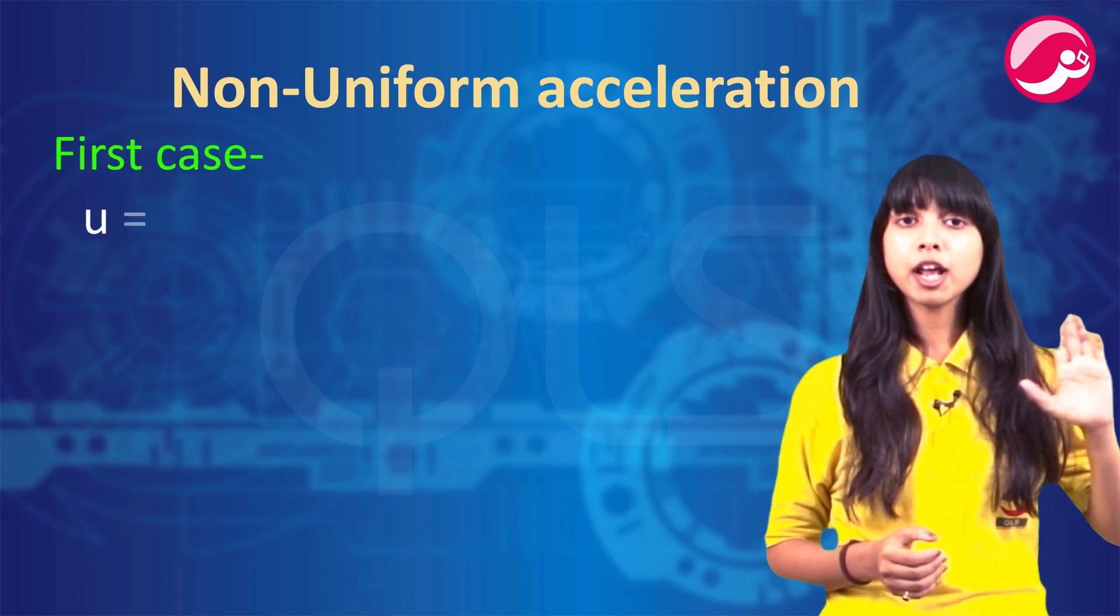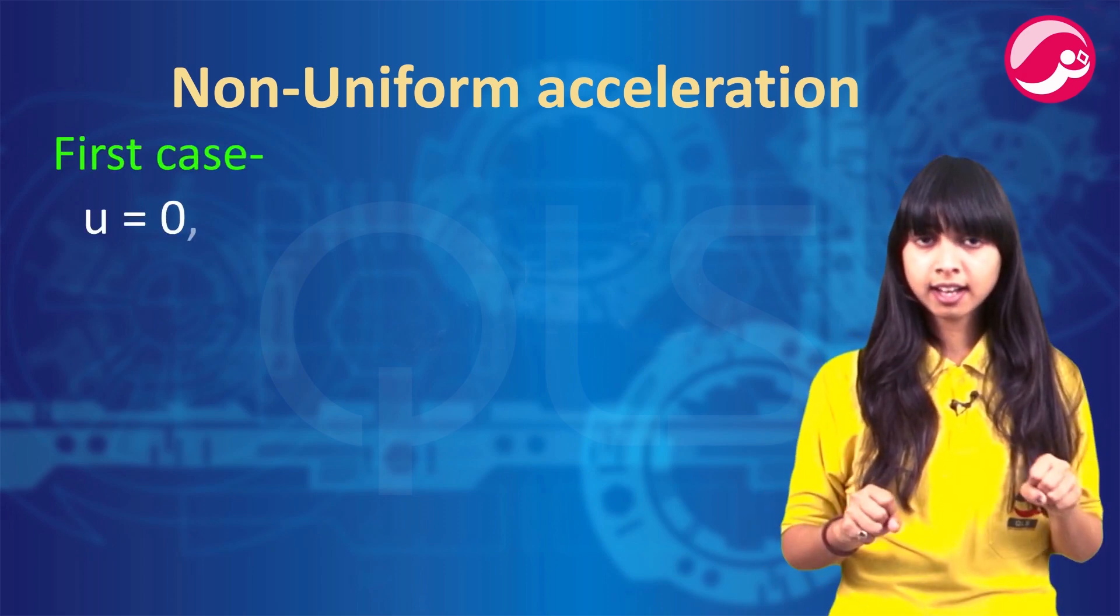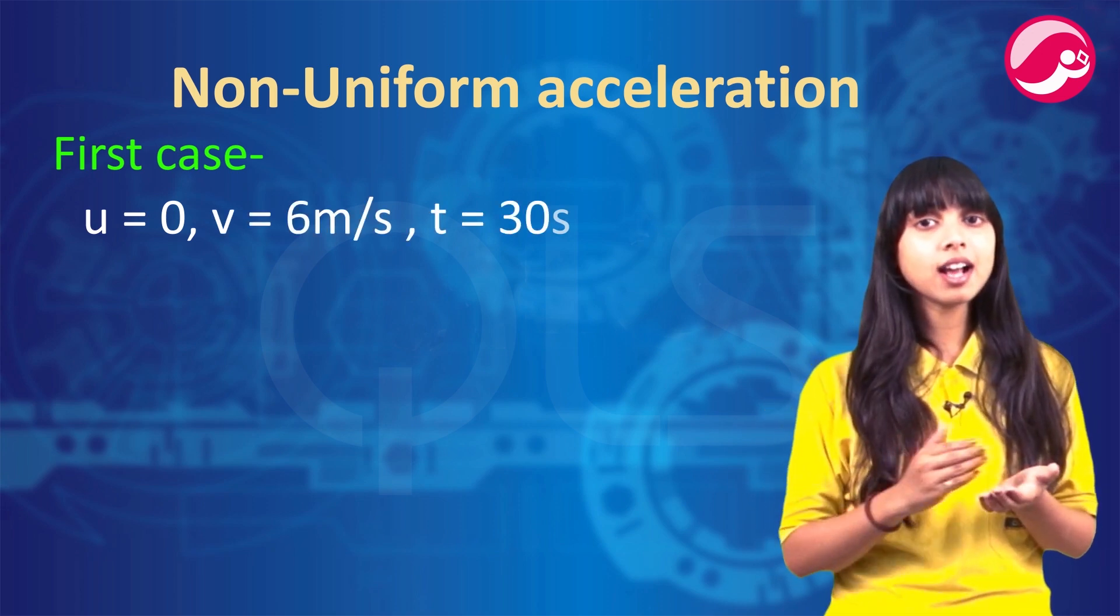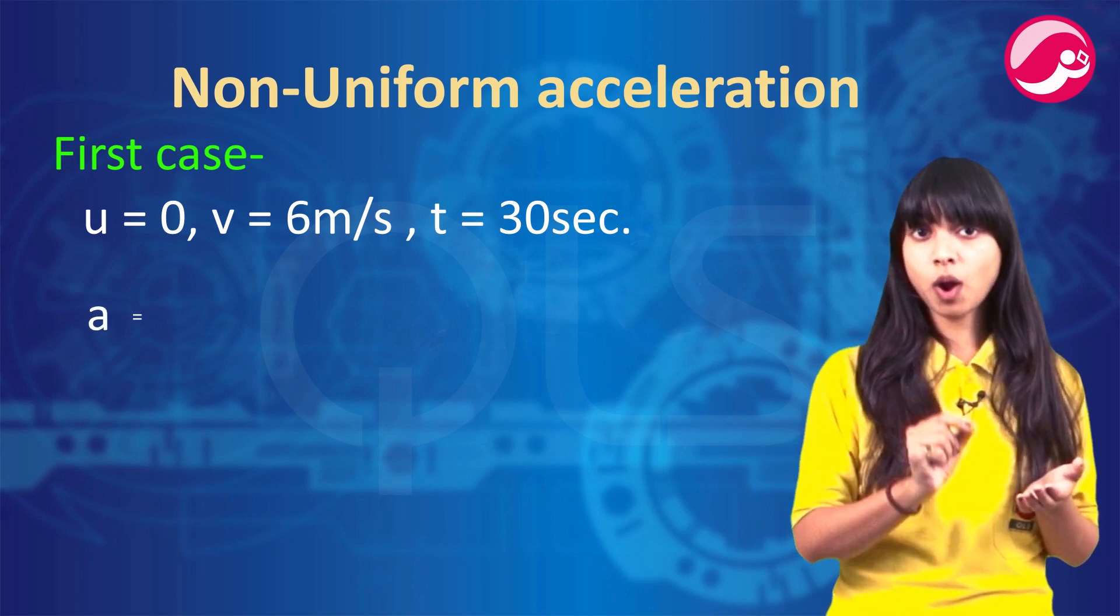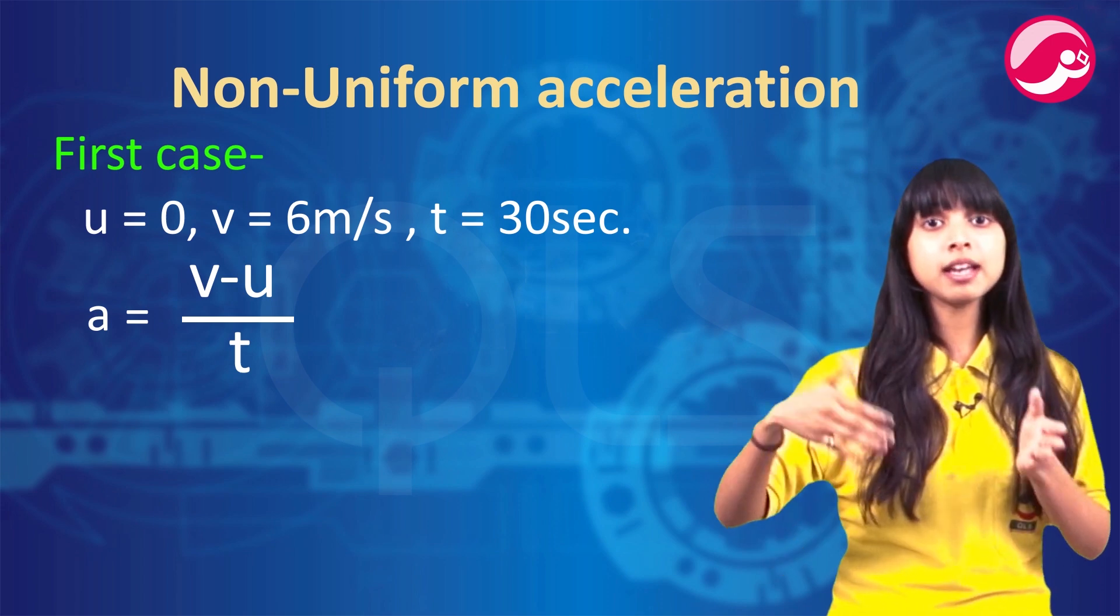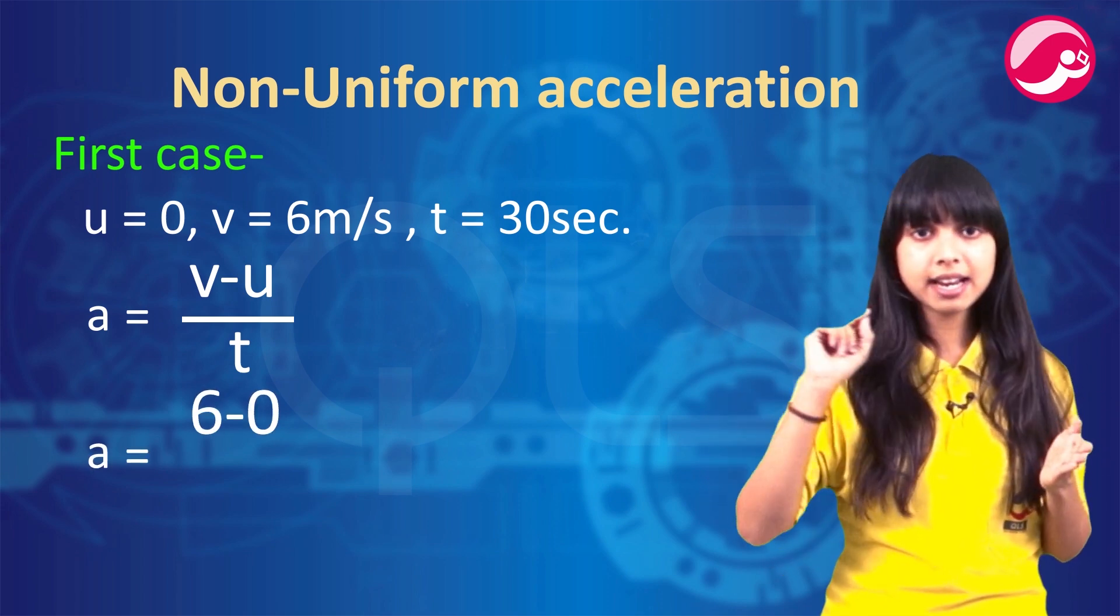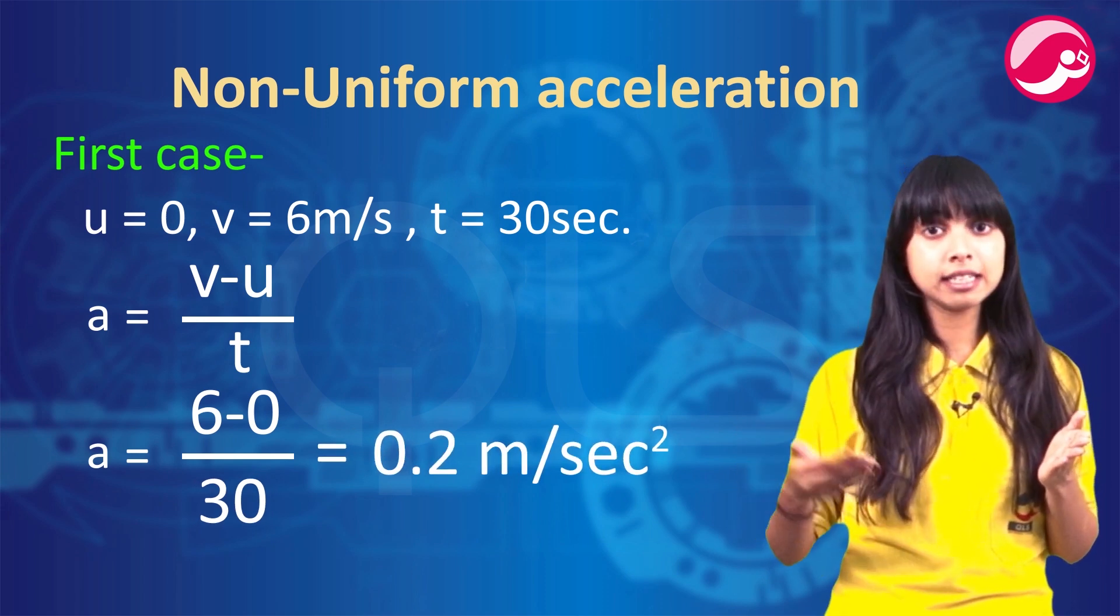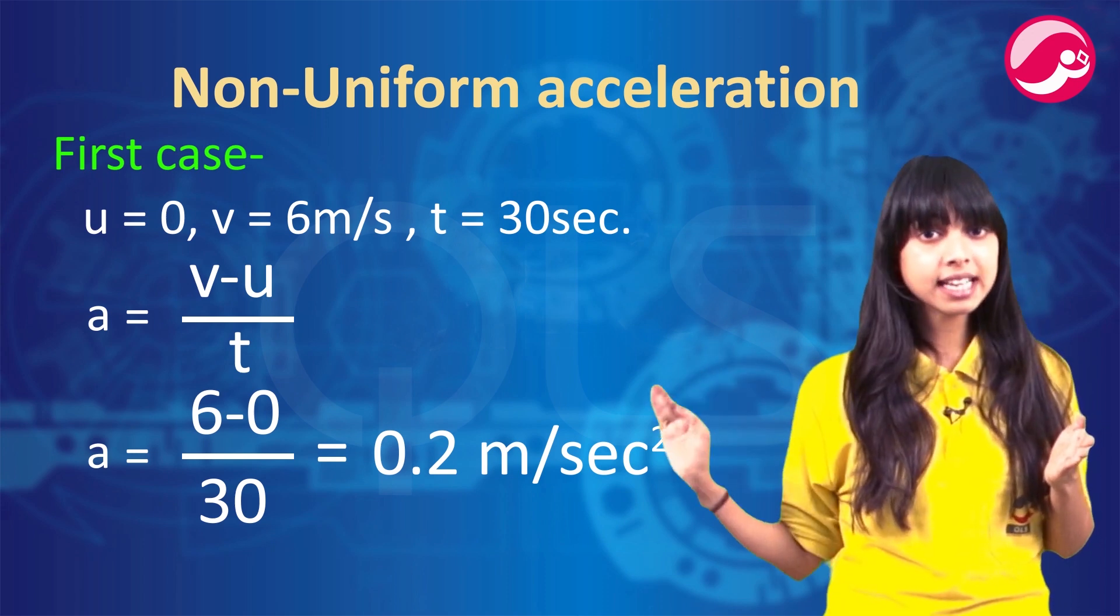First case: u is 0. Initially, he started from stop. V, the final, is 6 meter per second. And time taken is 30 seconds. So the formula is a equals v minus u upon t. If we put numerical values, a equals 6 minus 0 upon 30. That will be equal to 0.2 meter per second square, the SI unit of acceleration.